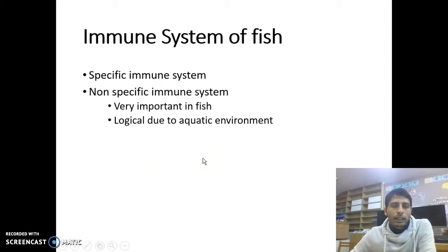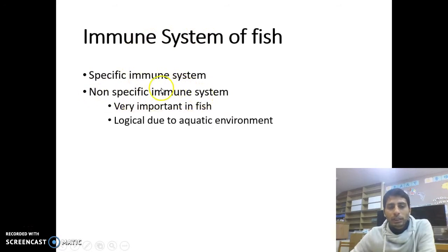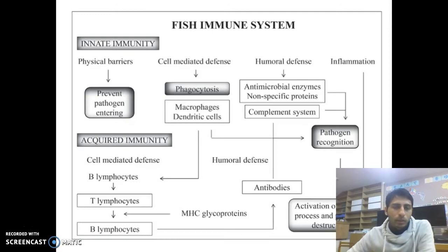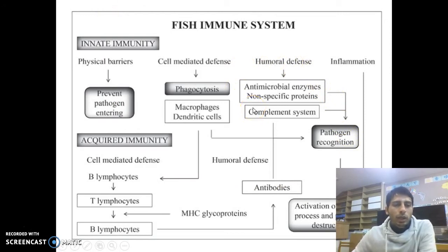Here we can see the immune system of fish: a specific immune system and a non-specific immune system. The non-specific immune system is very important in fish — it's logical due to the aquatic environment. So this is an overview of the fish immune system. We can see two types: first, innate immunity, and second, acquired immunity.